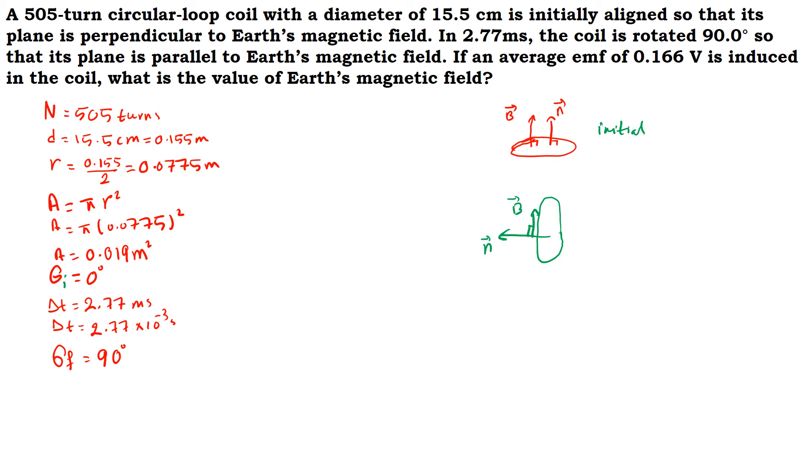This was the initial angle between the magnetic field and the normal line. And the rotation will have theta final equal to 90 degrees so that its plane is parallel to the Earth's magnetic field. As we see, B and the coil are parallel, but B and the normal are perpendicular.